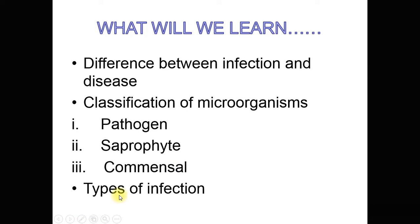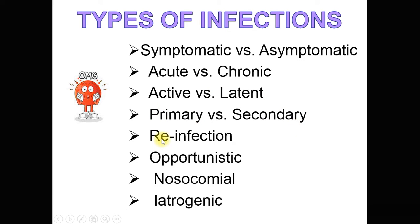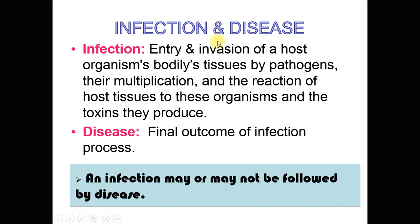In this lecture we are going to learn the difference between infection and disease, classification of microorganisms into pathogen, saprophyte, and commensal, and the different types of infection — symptomatic versus asymptomatic, acute versus chronic, active and latent infection, primary and secondary infection, reinfection, and what are opportunistic, nosocomial, and iatrogenic infections.